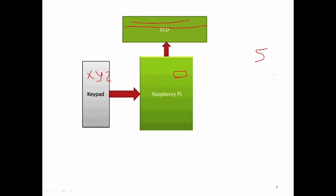If the user enters the wrong password, there will be a message on the LCD saying 'wrong password,' and then after 2 or 3 seconds, the message will again display 'enter the password.' The user is not aware of the original password, so the system will again and again ask for the password. You can also add more features — if five times the user is not able to enter the right password, then you can lock the system or generate an alert.